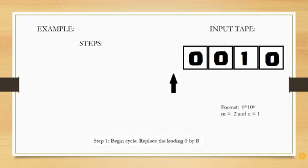A quick reminder, we have this format which is 0 raised to m, 1, 0 raised to n. For our example, we have m equals 2 and n equals 1. That's why we have two zeros on the left and one zero on the right of 1.